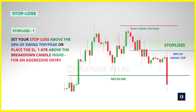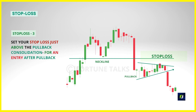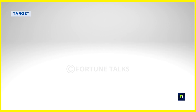If your entry was aggressive — you went short as and when the price broke below the neckline — this could be your stop loss. If you took a short entry after a buildup near the neckline, you get the freedom to place a much tighter stop loss just above the buildup or consolidation, which boosts your reward-to-risk ratio. If you missed both entries and shorted after a primary pullback, set your stop loss above the highest price in the group of pullback candles or just above the neckline if the pullback is very close to the neckline. If entering after a retest, the stop loss can be placed just above the highest wick of the retest candles, or more conservatively at 50% of the width of the pattern.